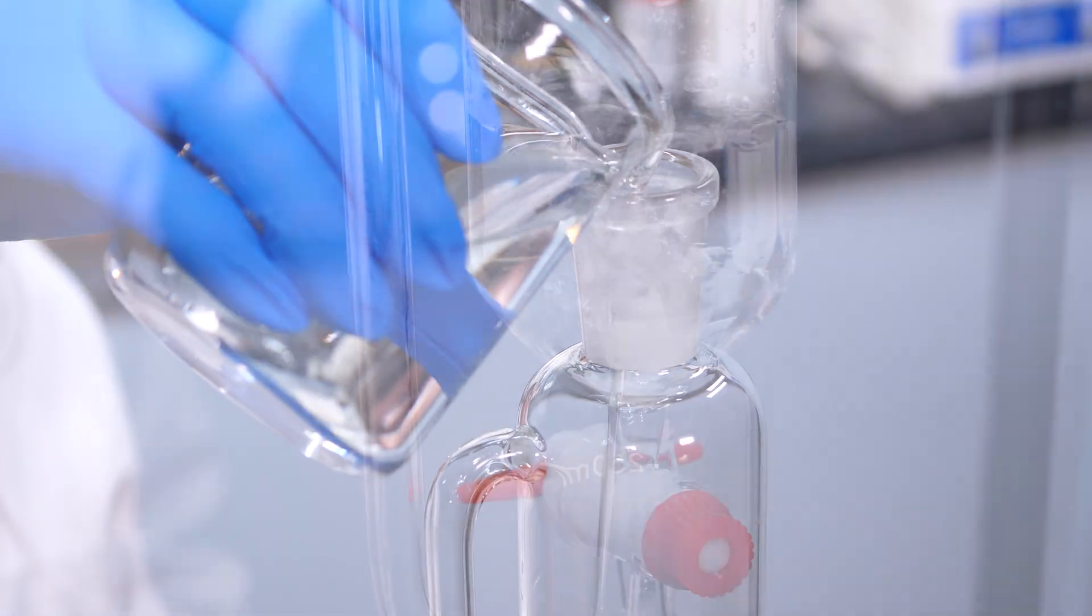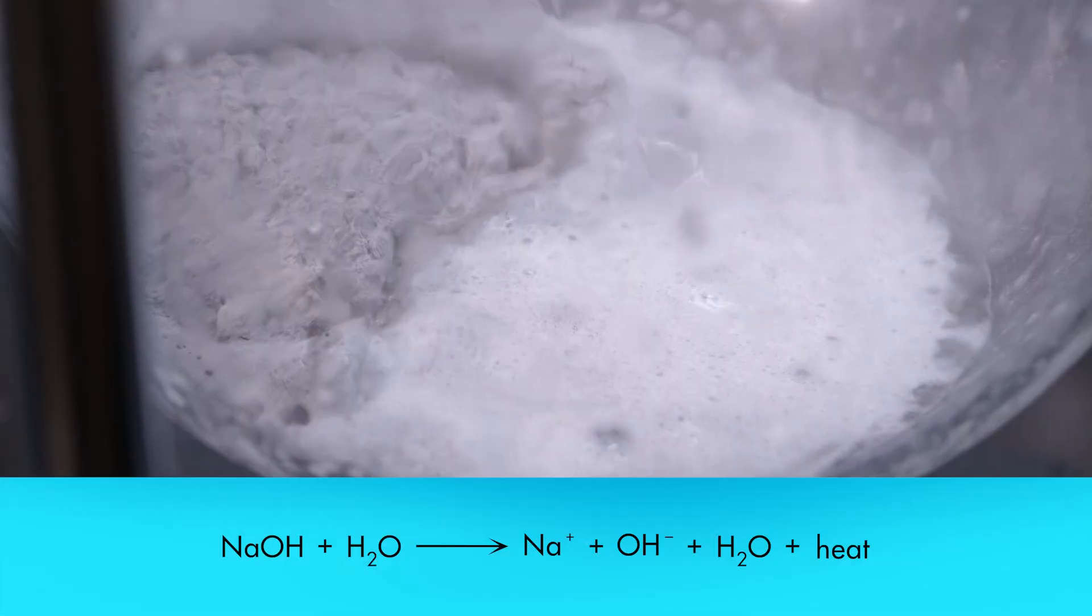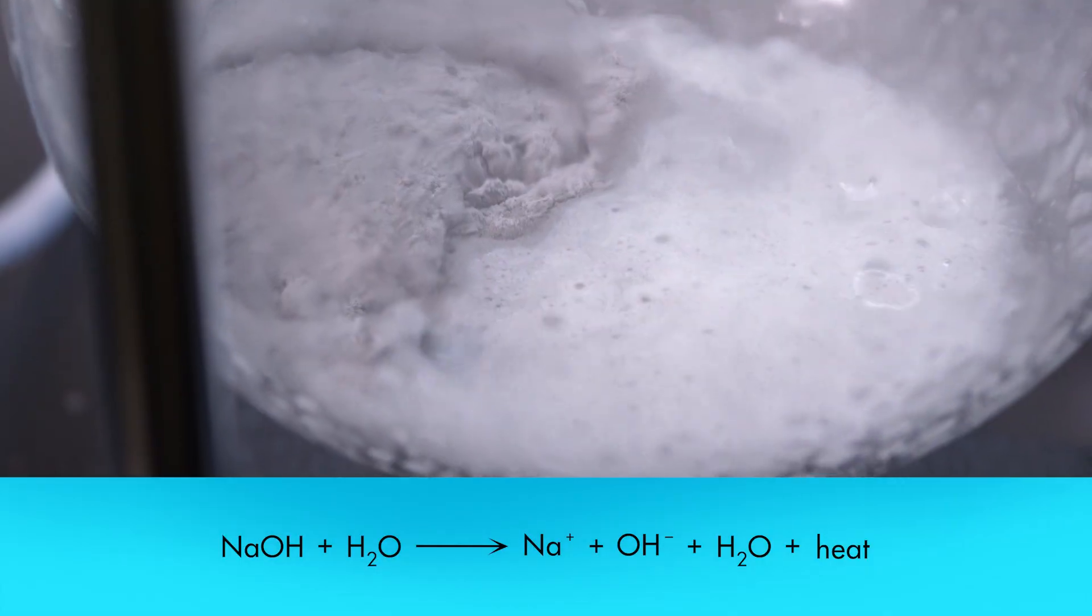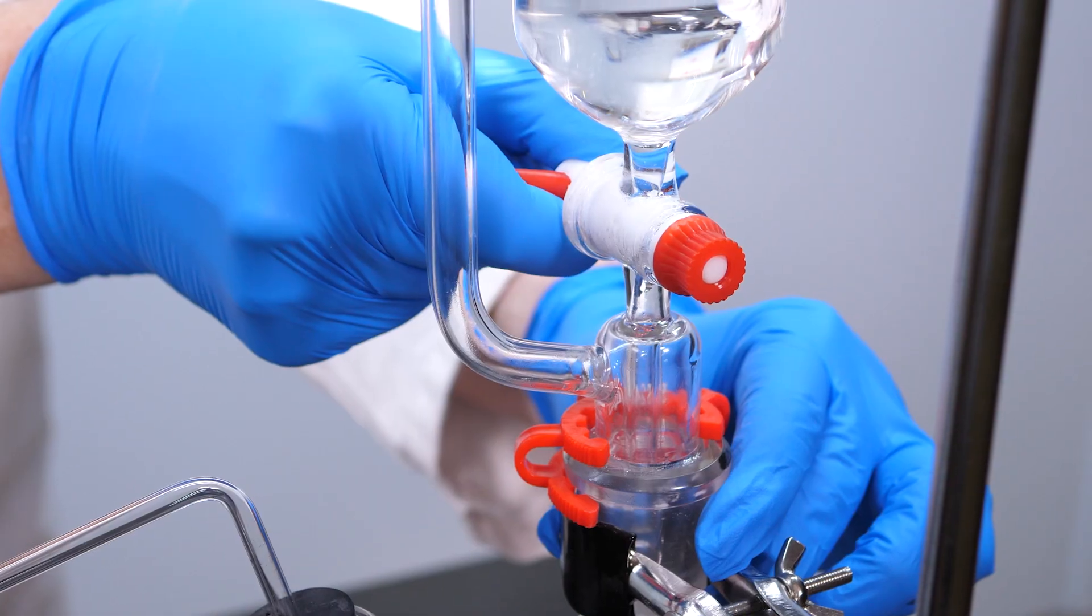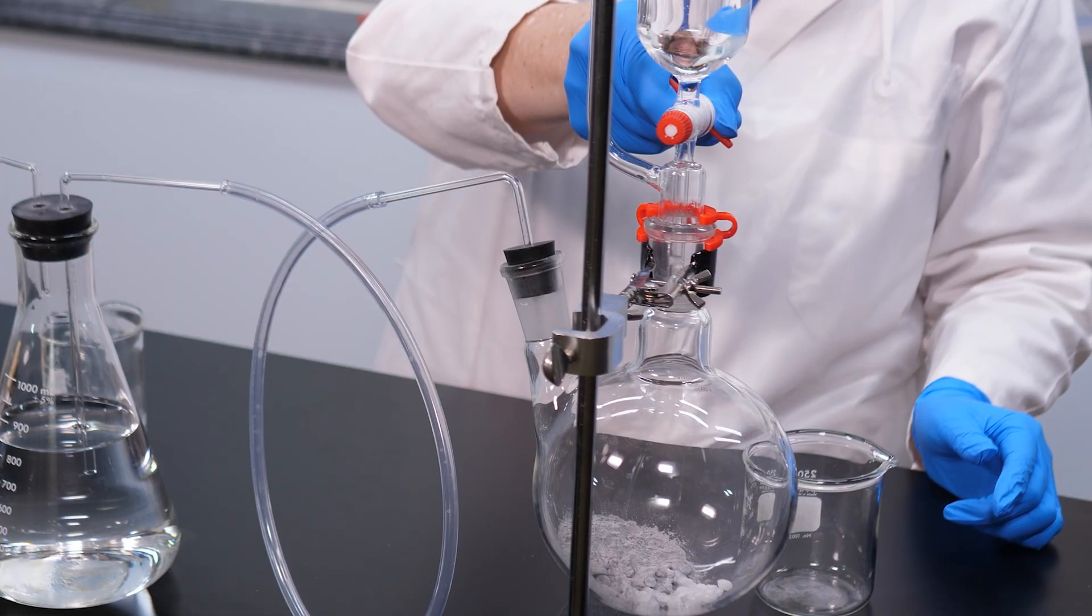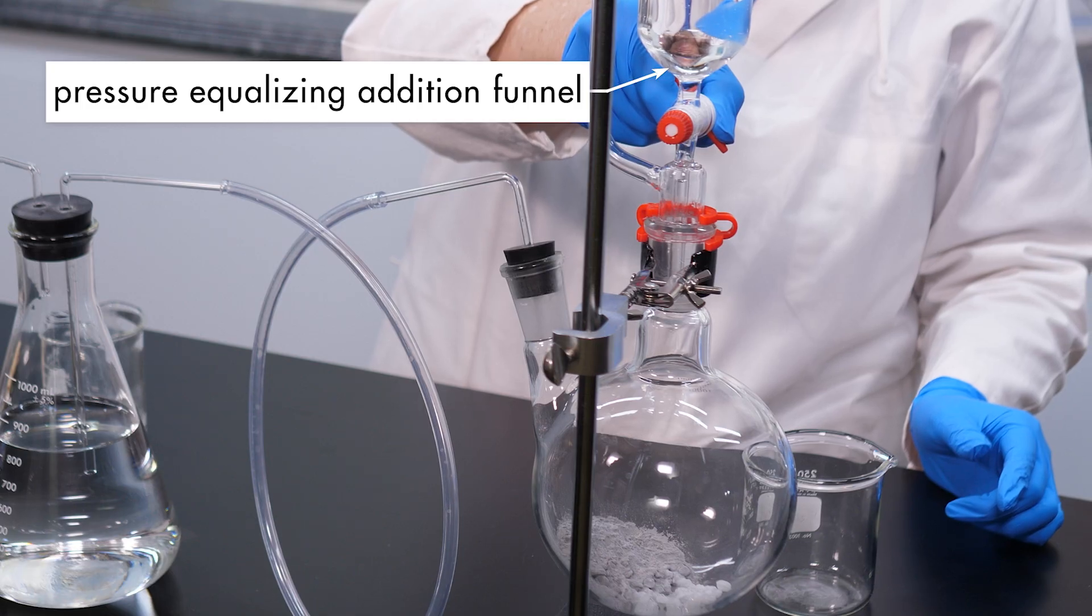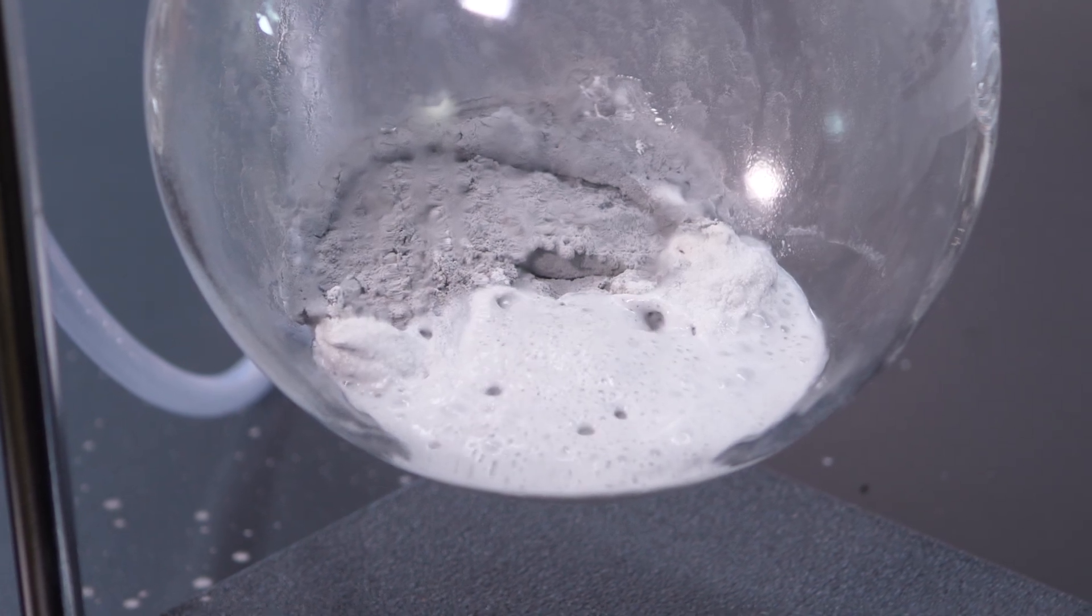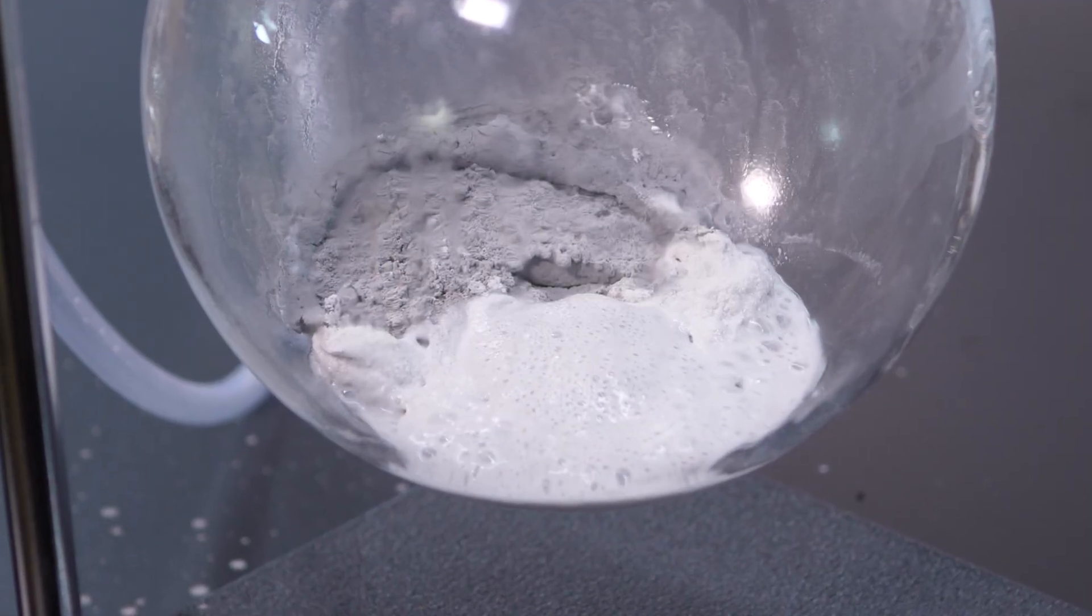To speed up the reaction, we pour 150 milliliters of water into the funnel. When sodium hydroxide dissolves in water, it completely ionizes, which produces a great amount of heat. The heat generated by the reaction may cause the solution to boil. To prevent the boiling solution from being forced up into the funnel, we use an apparatus called a pressure-equalizing addition funnel. As the reaction heats up, the sodium hydroxide reacts more quickly with the aluminium to produce sodium aluminium hydroxide and hydrogen gas.